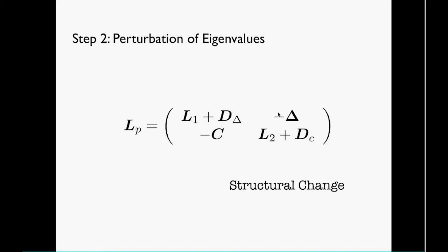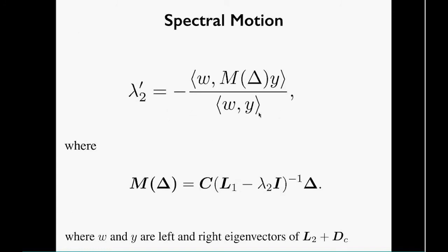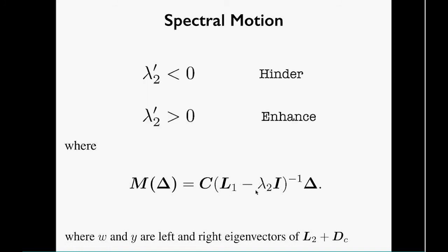This basically boils down after some computation to studying this bilinear form. This bilinear form is non-trivial because non-linearities pop in. This will depend on the left and right eigenvectors of the slave network; it also depends on the Laplacian of the master network. Basically what you're trying to do is get negative derivative to hinder synchronization and positive derivative to improve synchronization. This will boil down to studying spectral properties of the slave and the master simultaneously.